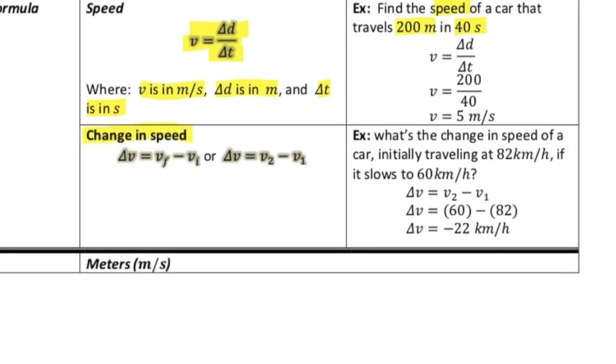Now change in speed, that's related to something that's called acceleration. So a change in speed means either an object speeds up or an object slows down. And that's where we get delta V, which is your final minus your initial or delta V is equal to your V2 minus your V1.